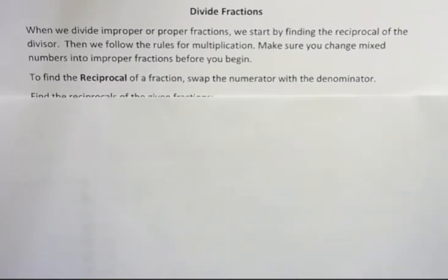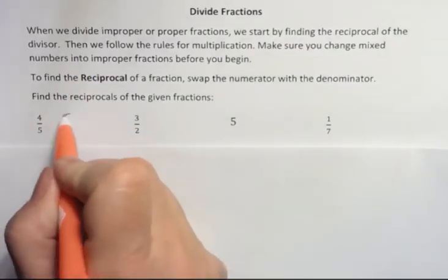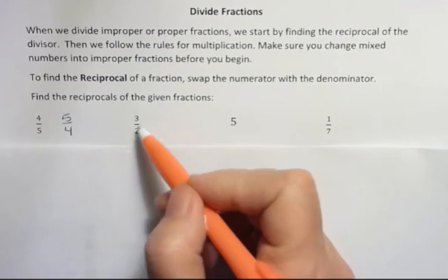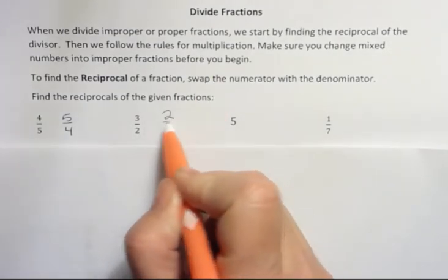To find the reciprocal of a fraction, swap the numerator with the denominator. So instead of having 4 over 5, we're going to write it as 5 over 4. That's the reciprocal. What would the reciprocal of 3 over 2 be? It would be 2 over 3.